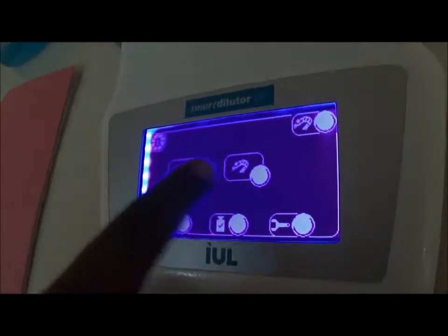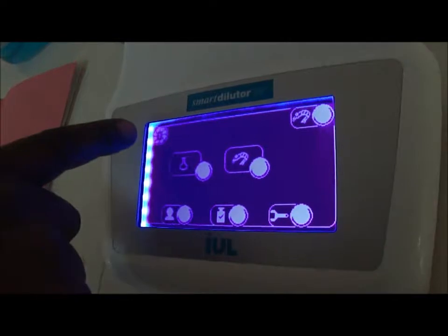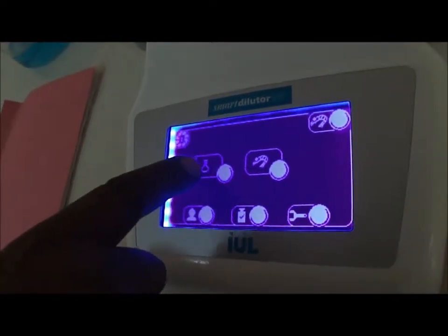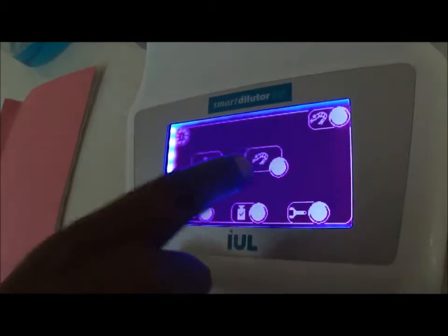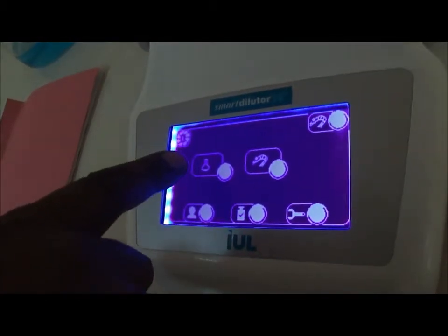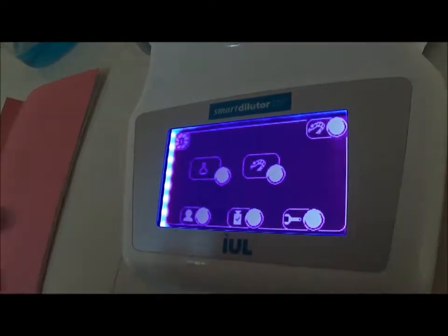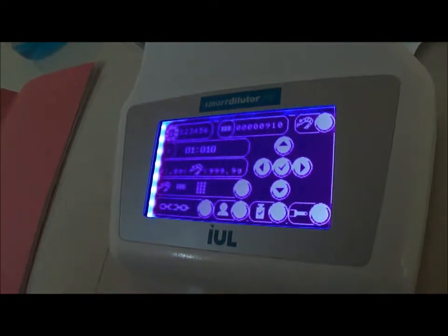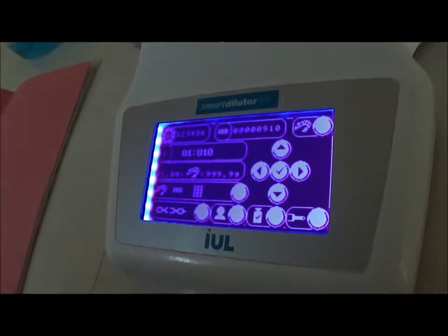You enter there, and you have two options for the pump numbers you have selected. You can select either dispensing or dilution. The syringe is where you have the dilution. You have this tube, where you have dispensing. In my case, I have selected for pump one, the dilution.